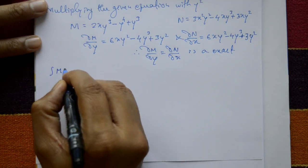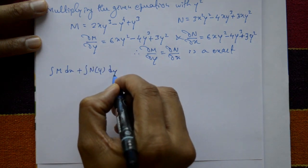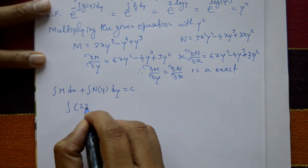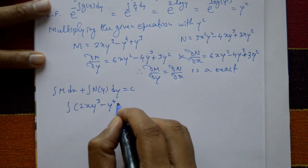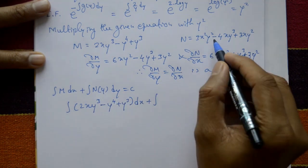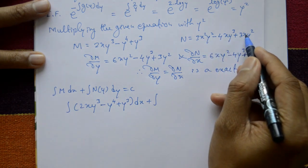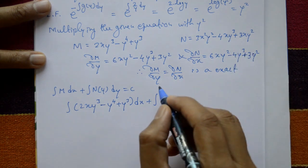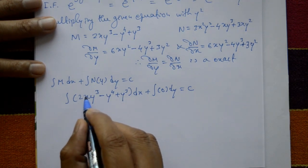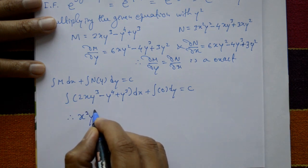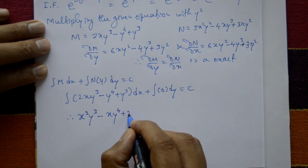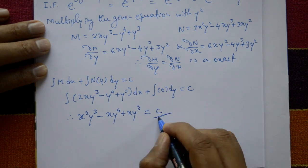Now integrate: ∫M dx + ∫(terms in N not containing x) dy = C. Integrating M = 2xy³ - y⁴ + y³ with respect to x: x²y³ - xy⁴ + xy³ = C. Since all terms in N contain x, there are no extra terms. The required general solution is x²y³ - xy⁴ + xy³ = C.